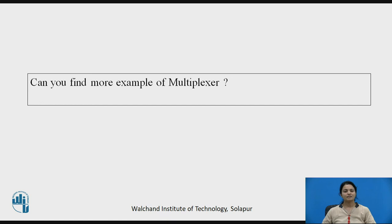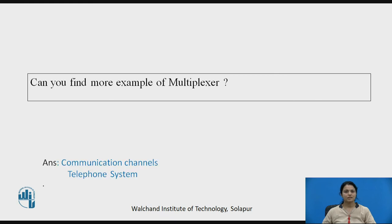A question: can you find more examples of multiplexers? There are many answers, but two good ones are: any communication channel like radio — in a radio you have many channels and you can select one using a multiplexer circuit — and in a telephone system, when you want to select one number, you use a switching system, which is the multiplexer.